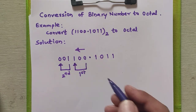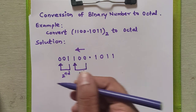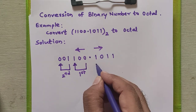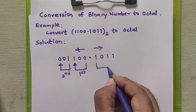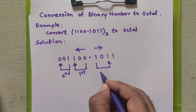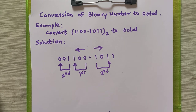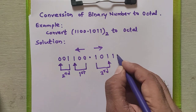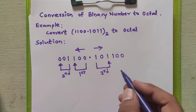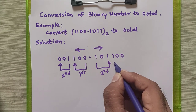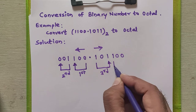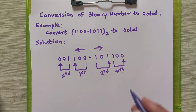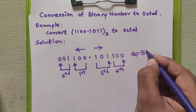For the integral part we start grouping from right to left, and for the fractional part we start grouping from left to right. The single one after the decimal point — if you put zeros in front of the number there is no change to the given number, so we can add two zeros to form a group of three binary bits.